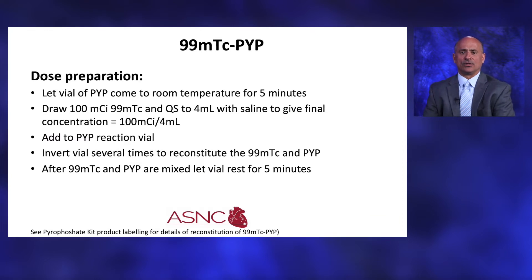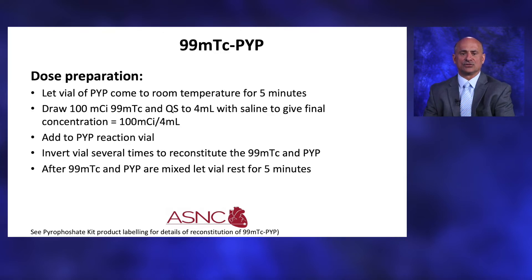These doses are prepared generally by radiopharmacies, but let's review the process of making up a TEC-99M PYP kit. These cold PYP vials are refrigerated and should be brought to room temperature for approximately five minutes. Package inserts suggest adding 100 millicuries of TEC-99M to the vial, QS to 4 mLs, giving a final concentration of 100 millicuries in 4 mLs. This is added to the PYP reaction vial, inverted several times to reconstitute, and should be let to sit for five minutes prior to administering the dose.